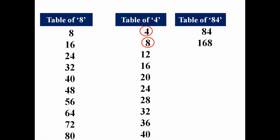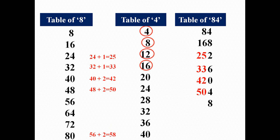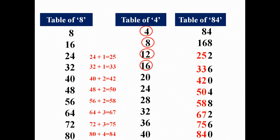In the third row, here is a 2-digit number in the table of 4, that is 12. So we can write 1 with the digit as it is, that is 2, and add 24 and 1, it will become 25. So we will write 25 before 2 in the table of 84. We can say that 84 3s are 252. Similarly, we can write the whole table of 84 like this. As you can see on the screen, this is the table of 84.